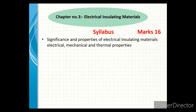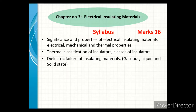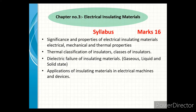In this unit, first we study the significance and property of electrical insulating material — electrical property, mechanical property, and thermal property. Next, the thermal classification of insulating material and classes of insulator on the basis of thermal stability. Next, dielectric failure of insulating material — that means gaseous, liquid, and solid state. The last point is application of insulating material in electrical machines and devices.